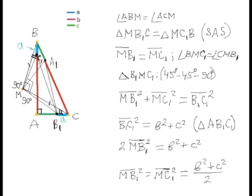So triangles MB1C and MC1B are congruent by two sides — one of them is a blue segment — and the included angle. From this it follows that segments MB1 and MC1 are congruent, and that triangle B1MC1 is an isosceles right triangle. So the lengths of MB1 and MC1 satisfy the equality MB1 squared plus MC1 squared equals B1C1 squared. On the other hand, from the right triangle AB1C1, MB1 squared equals MC1 squared equals b squared plus c squared over 2.